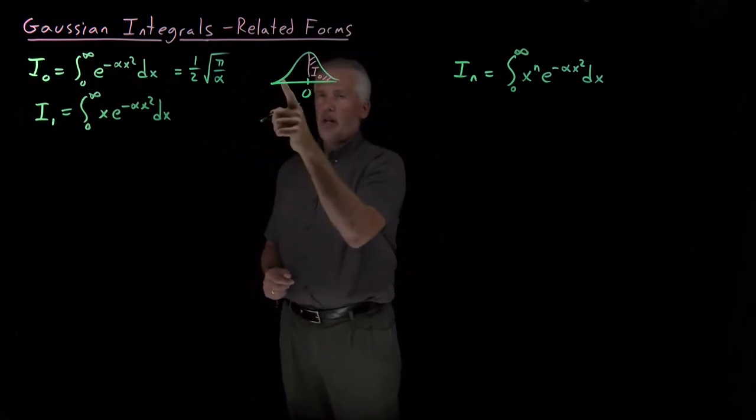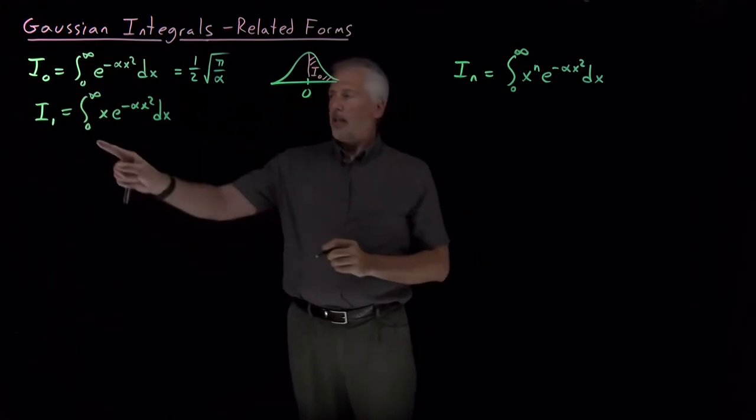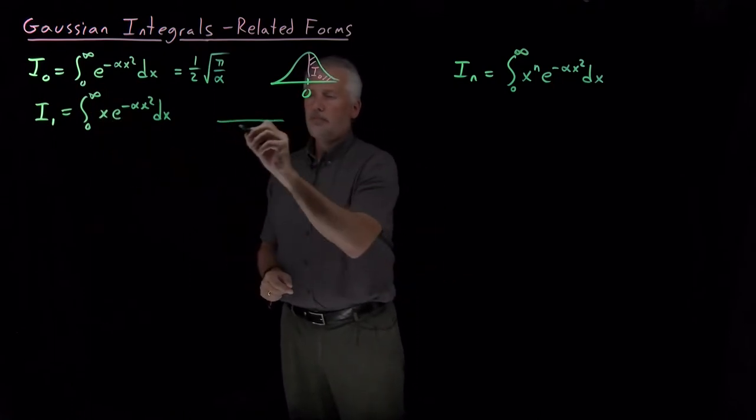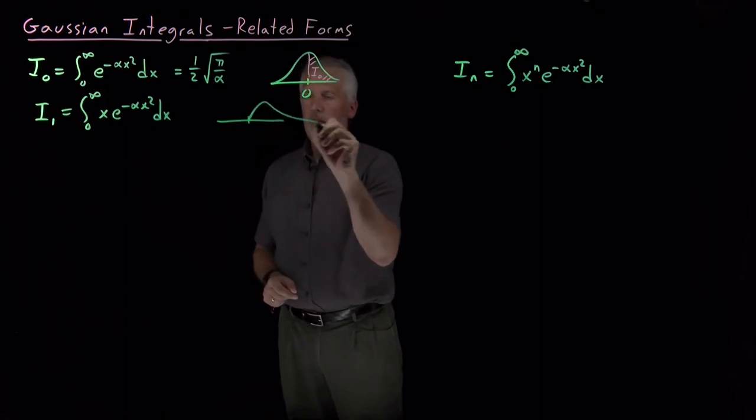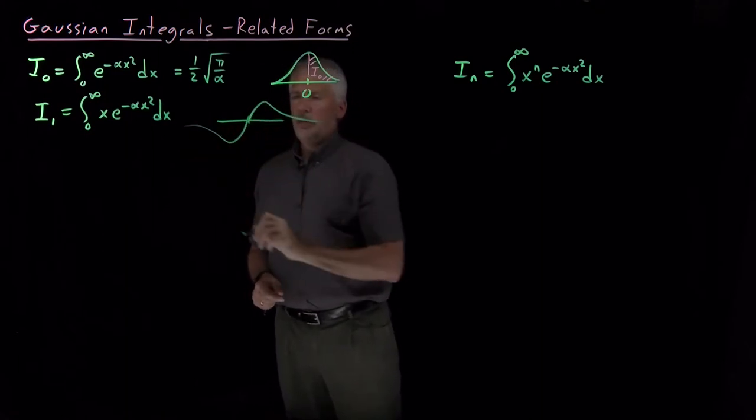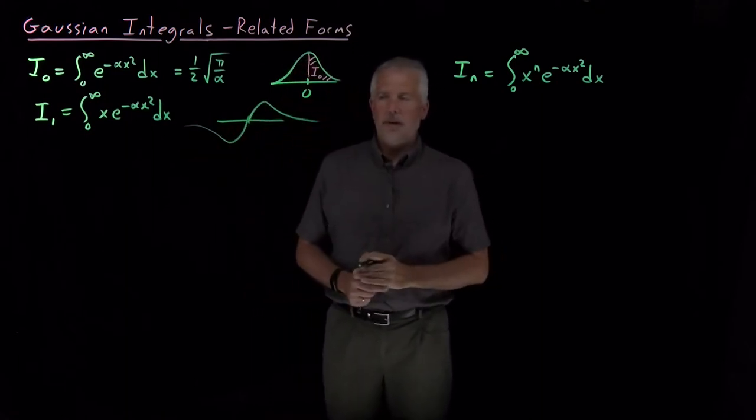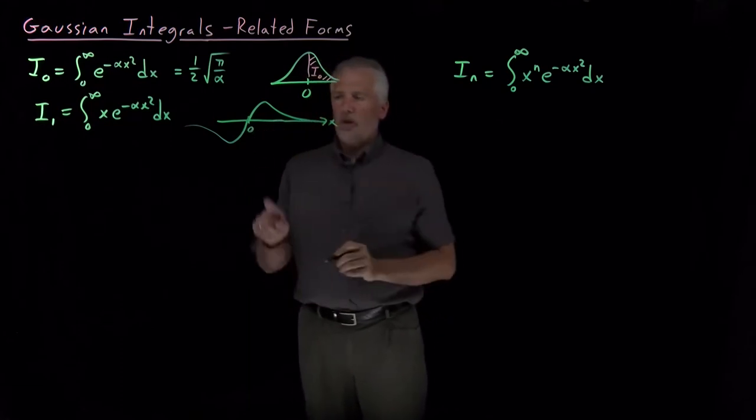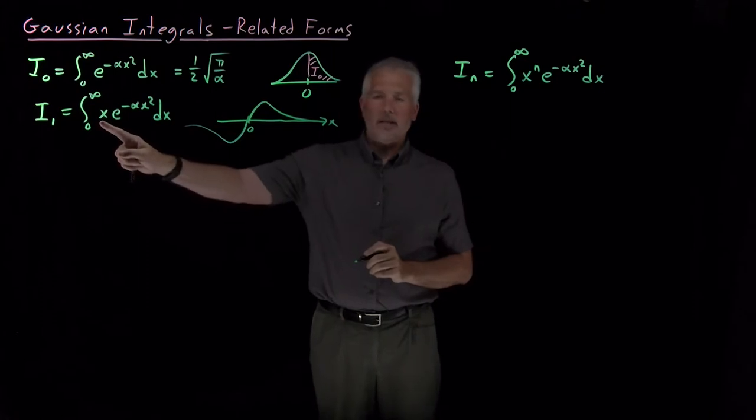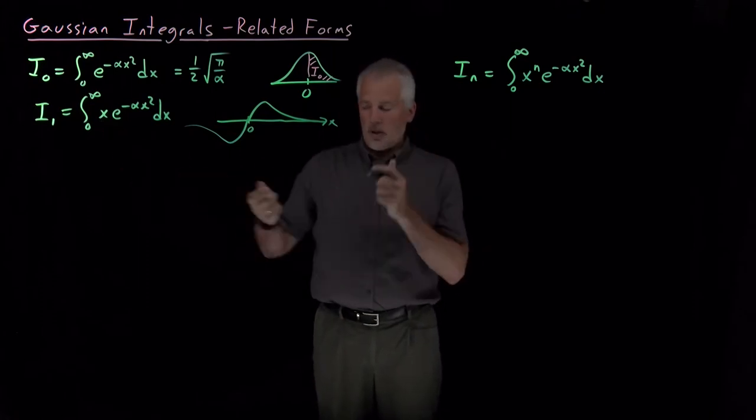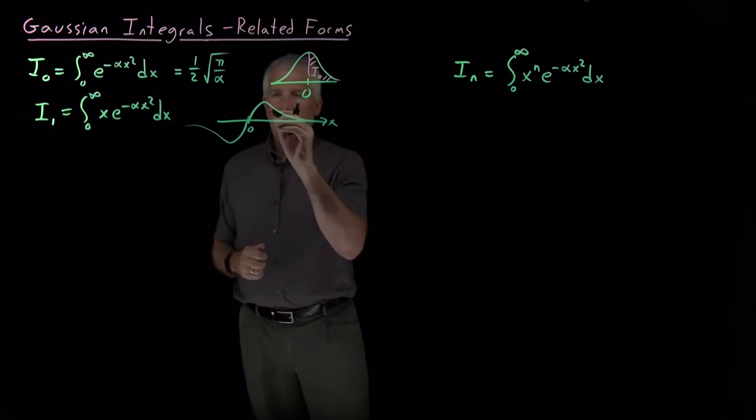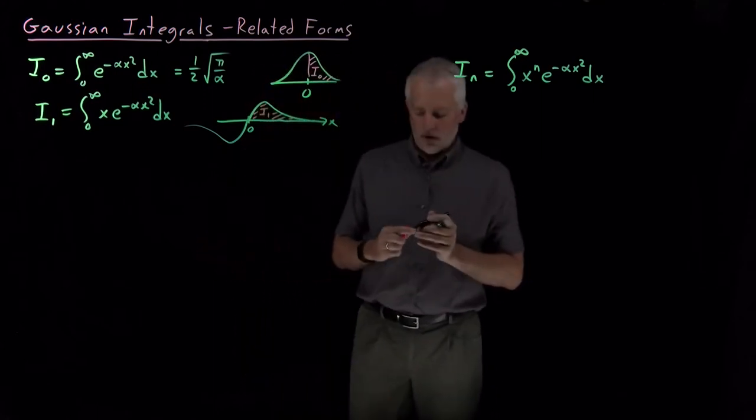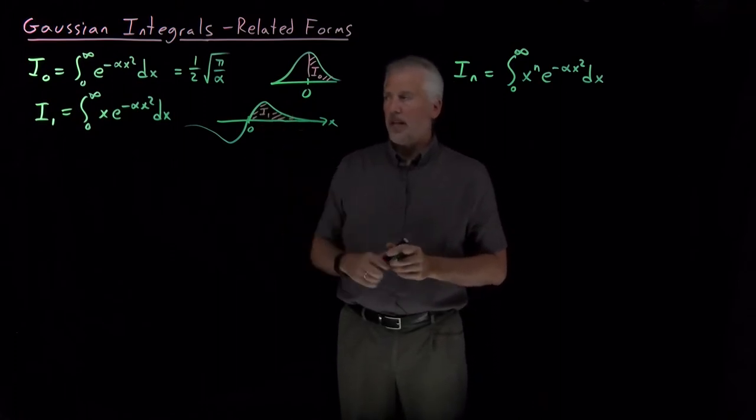So graphically, if I₀ is the area under half of a Gaussian, this is the area under half of a curve that looks like x e^(-αx²). So that graph still goes to 0 at large and small values of x, like a Gaussian does, but also goes to 0 at the origin because of the x. So now we're asking what is the area under this section of the curve? So that's the question we're asking. What is this I sub 1?